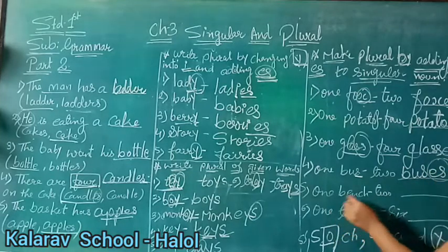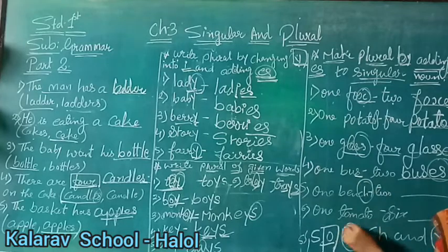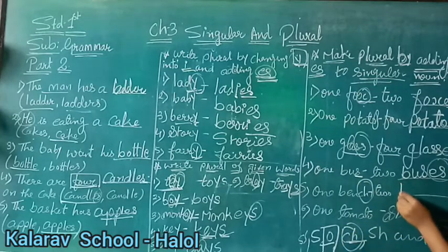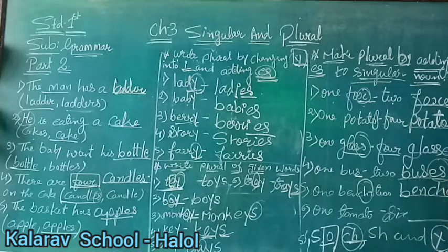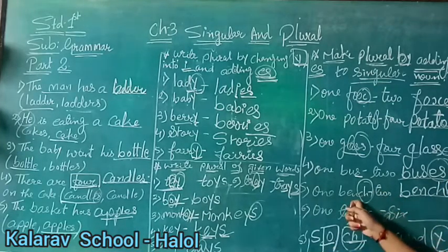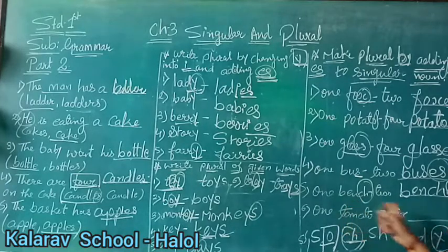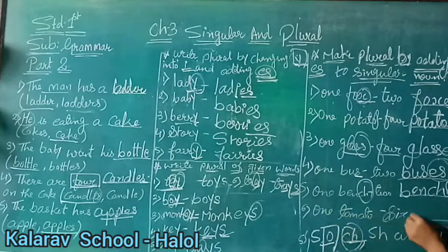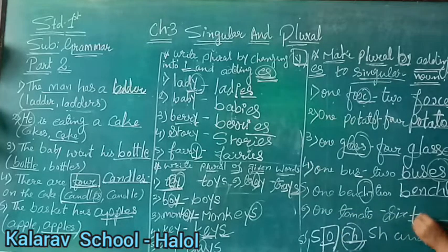Fifth number is one bench - what is coming at the end? C-H is there. So again: B-E-N-C-H-E-S. We are putting ES here because these are the letters that come at the end of the singular noun, so we add ES. And the last one is one tomato and six tomatoes.